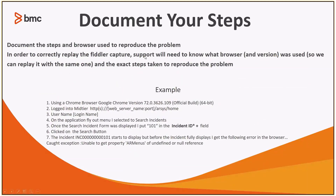Make sure — this is important — that you document the steps that you used to reproduce the problem, as well as the browser and version. Below is an example of this documentation. Using a Chrome browser version 72, you logged into the mid-tier, put in your login name. On the application flyout menu, you selected to search incidents. On the search incidents form, in the incident ID field, you put in 101. You clicked the Search button. The incident was displaying and before it displayed, you received a caught exception. A screenshot here is always helpful. The more information you provide us to debug your issue, the better.